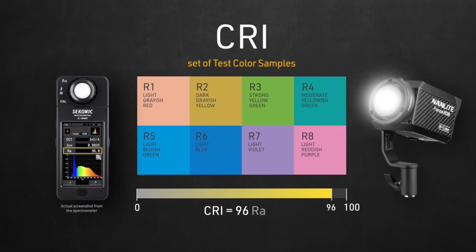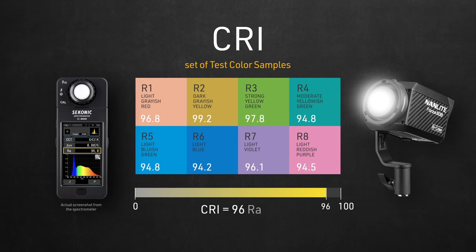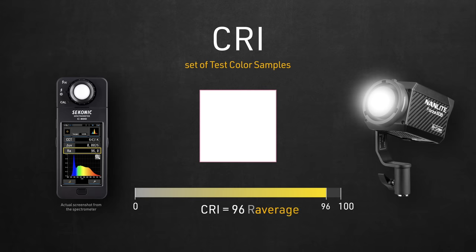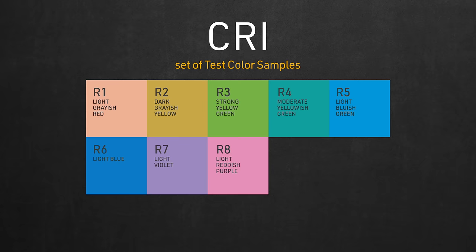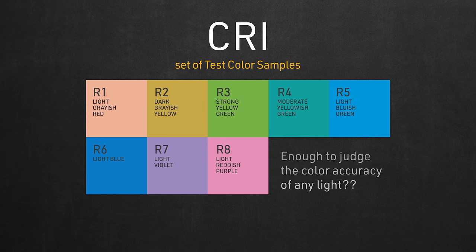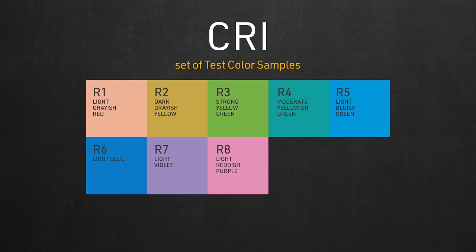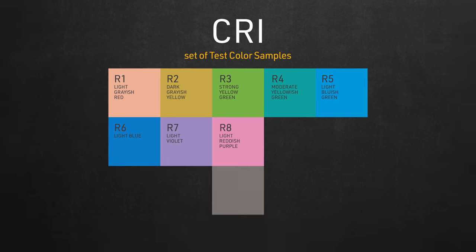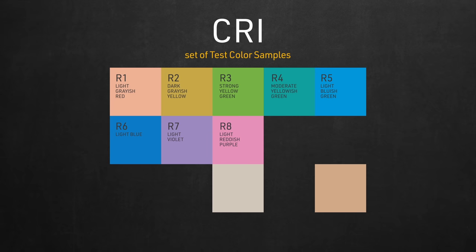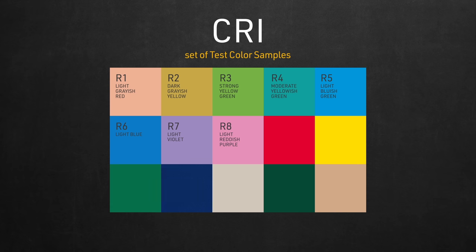The spectrometer measured the scores of all R colors to see how faithfully this light represented them, then combined those scores to get an RA average of 96. Looking back at those colors, do you think they're enough to let us judge the color accuracy of any light? The only color that can barely relate to skin tones is R1. The rest is a bunch of generic and muted shades of greens, blues, and violets. What about other colors we care more about as filmmakers — like extra shades of pink for skin tones, primary red and yellow, or solid green and blue for chroma keying?